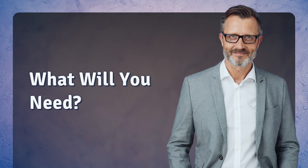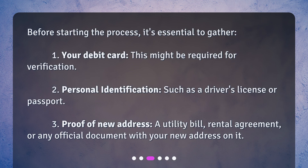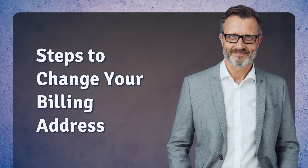What will you need? Before starting the process, it's essential to gather: 1. Your debit card — this might be required for verification. 2. Personal identification, such as a driver's license or passport. 3. Proof of new address: a utility bill, rental agreement, or any official document with your new address on it.